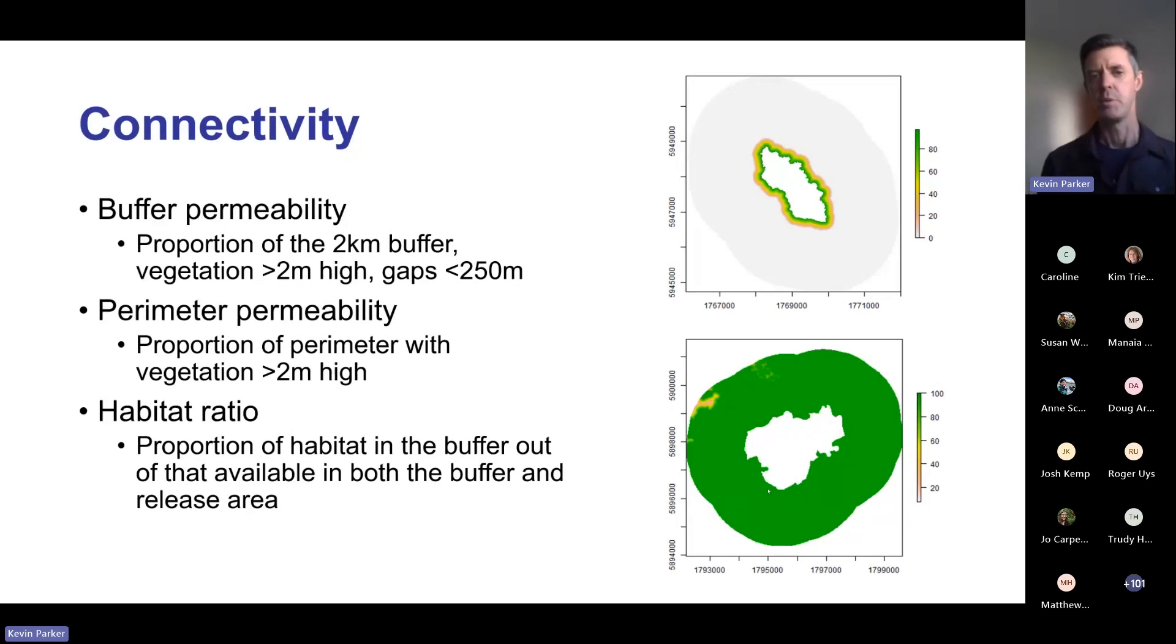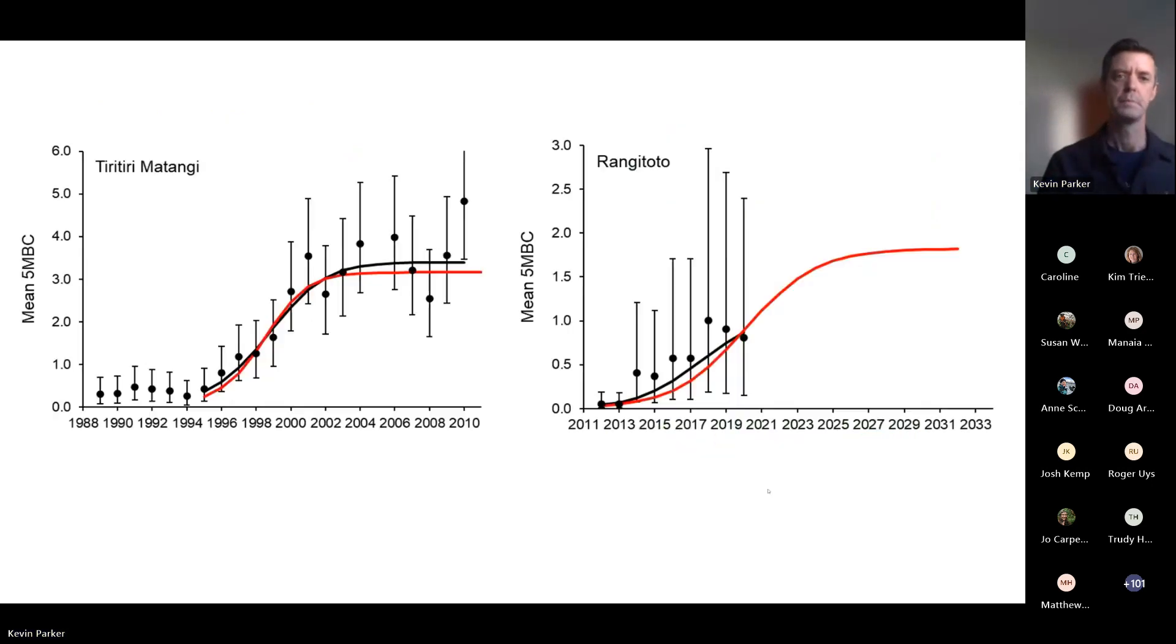For each of these eight sites we measured connectivity in three different ways. First was buffer permeability - the proportion of the two kilometer buffer surrounding the release area that has vegetation two meters or more in height and gaps of 250 meters or less, habitat we think popocatia will happily move through. We also measured perimeter permeability - the proportion of the perimeter of the release area with vegetation of two meters or more in height. Finally, we measured habitat ratio - the proportion of habitat in the buffer out of that available in both the buffer and the release area.